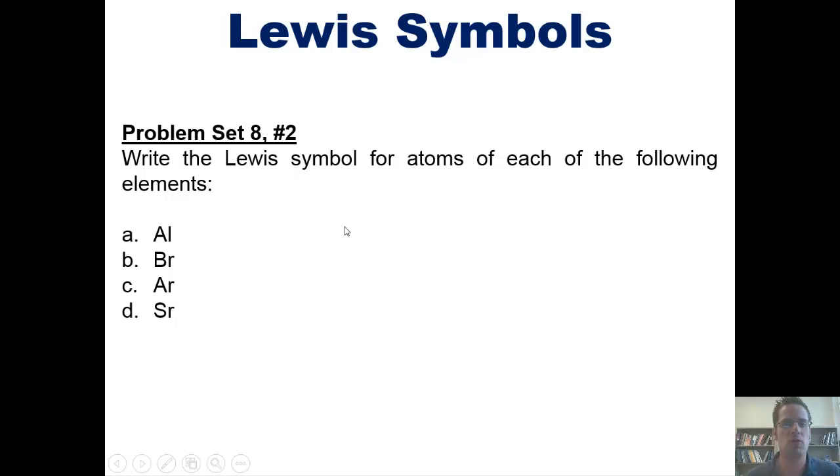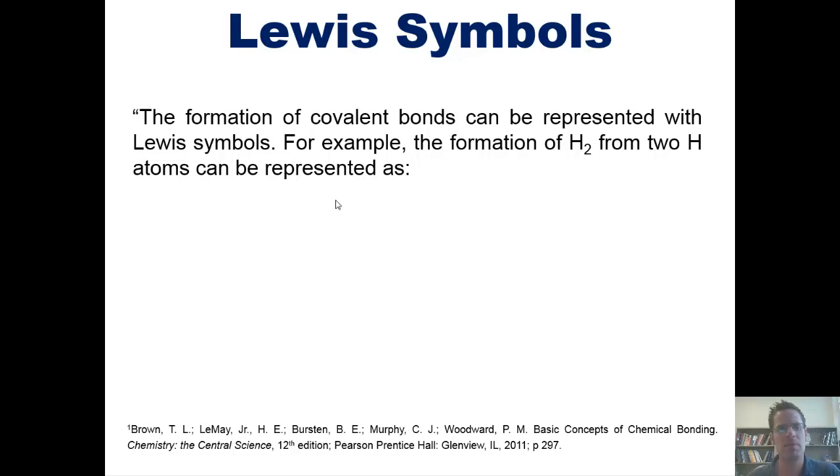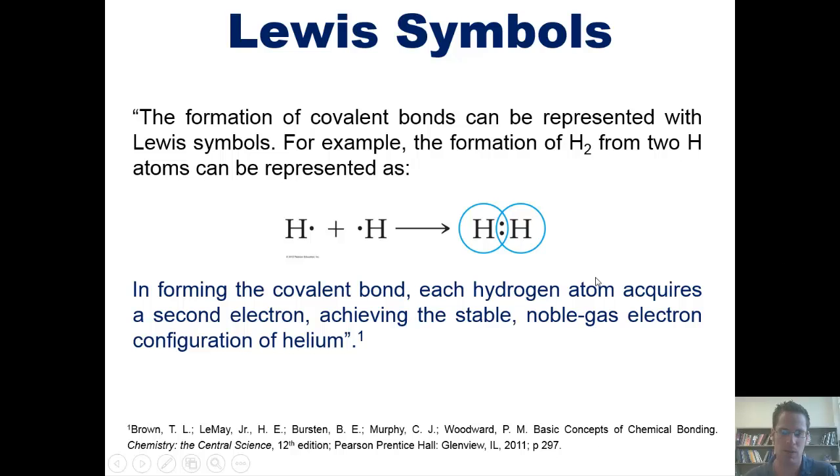Now, we've talked in the past about covalent bonds, that is, bonds in which electrons are more or less shared between two atoms. The formation of covalent bonds can be represented using Lewis symbols. For example, the formation of H2, which is a molecule of hydrogen, from two individual hydrogen atoms can be represented like this. When they go together, they basically snap those two electrons into each other's holes in a complementary fashion to form this molecule. In forming the covalent bond, each hydrogen atom acquires a second electron from its partner, which makes each hydrogen atom feel as if it's achieving the stable noble gas configuration of helium.